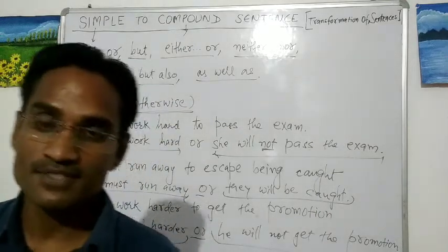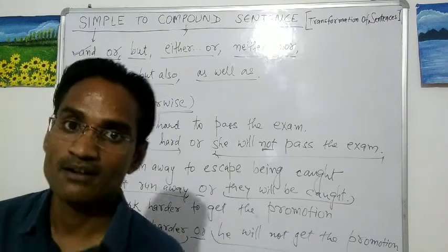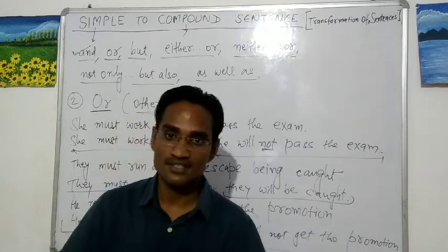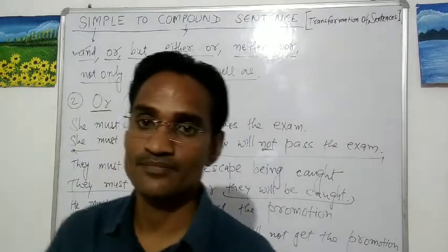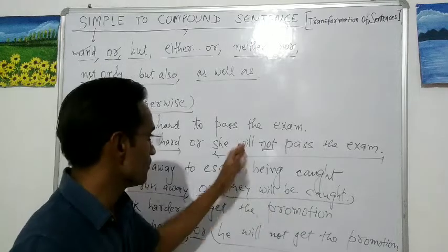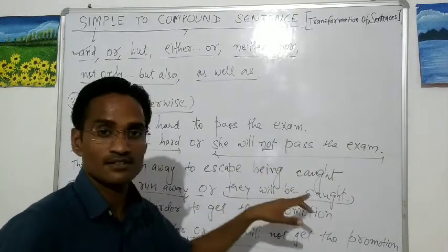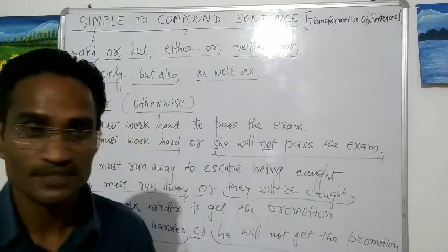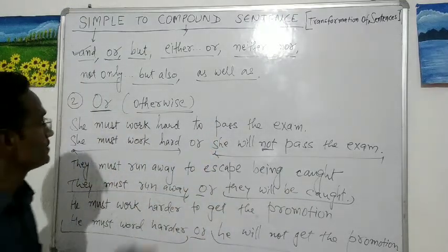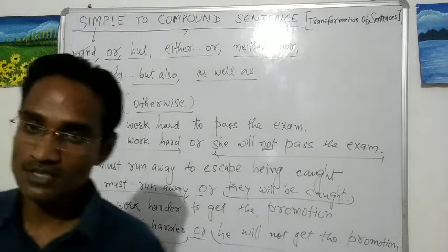The conjunction 'or' gives the sense of 'otherwise' — it talks about the just opposite condition, the just opposite situation. Accordingly, we use 'will' or 'will not' to express what is going to happen. These are the ways to change a simple sentence into a compound sentence.